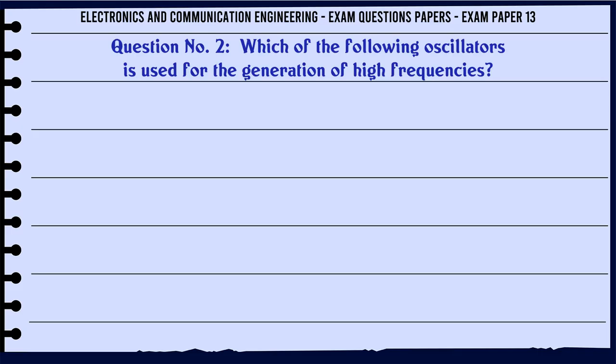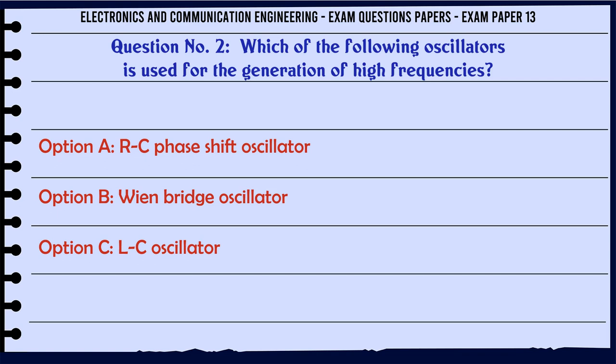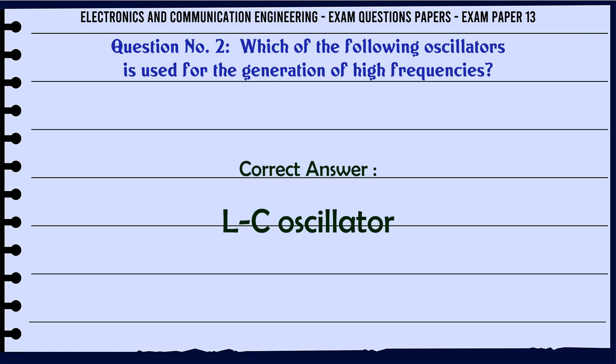Which of the following oscillators is used for the generation of high frequencies? A: RC phase shift oscillator, B: Wien bridge oscillator, C: LC oscillator, D: Blocking oscillator. The correct answer is LC oscillator.